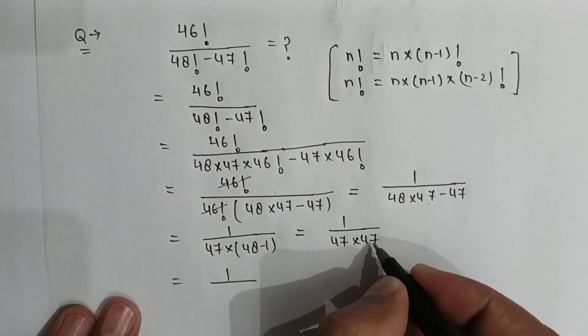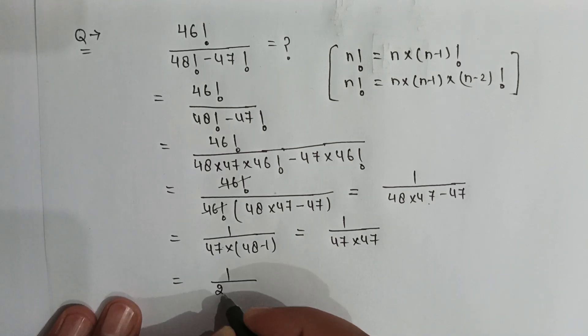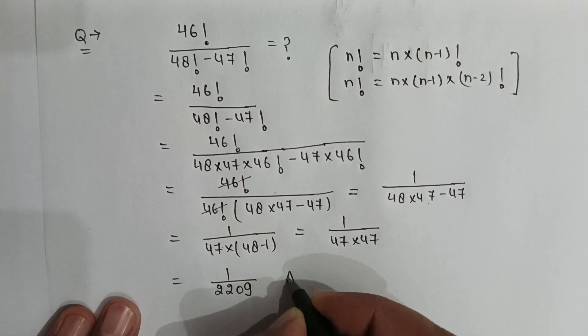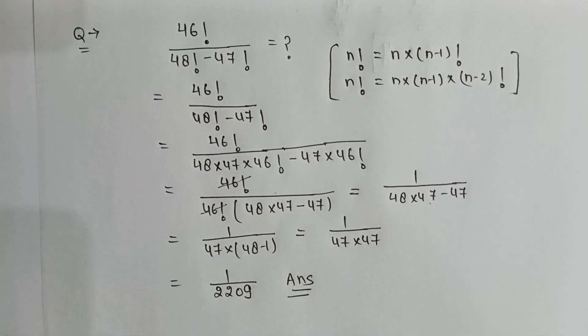This is equal to 1 upon 47 multiply by 47. So if we multiply 47 by 47, then it will be 2209, and this is our answer. Thank you friends.